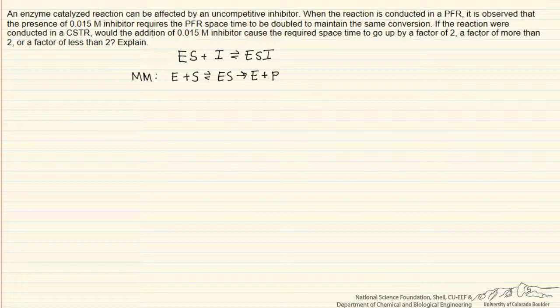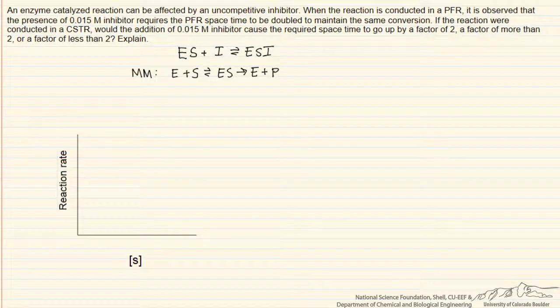When we have inhibitor binding to the enzyme-substrate complex, it will affect this species as an intermediate. Typically what we observe when we have the rate of reaction as a function of substrate concentration is that at low substrate concentration for Michaelis-Menten kinetics, we get a linear rise, and then as we saturate the enzyme, we level off.